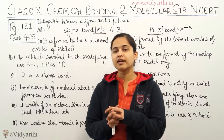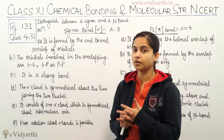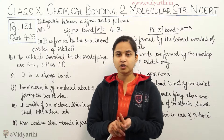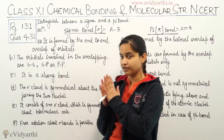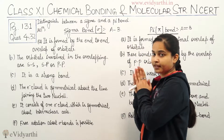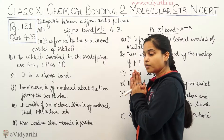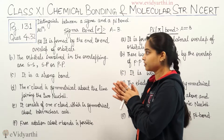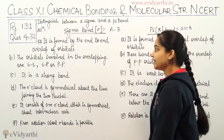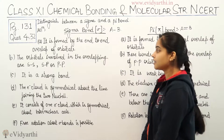Now please have a look at the board. I have just given you the overview of what a sigma bond and a pi bond is. Now please look at the board to see how to write this in your notebooks. Sigma bond is formed by end-to-end overlap of orbitals.